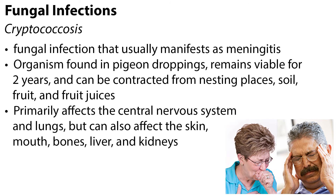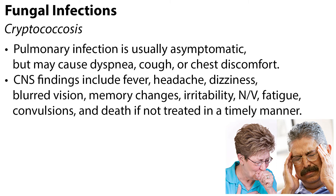Cryptococcus is a fungal infection that usually manifests as meningitis. The organism is found in pigeon droppings and remains viable for two years, and can be contracted from nesting places, soil, fruit, and fruit juices. Cryptococcus primarily affects the central nervous system and lungs, but can also affect the skin, mouth, bones, liver, and kidneys. Pulmonary infection is usually asymptomatic but may cause dyspnea, cough, or chest discomfort.